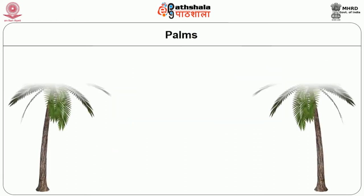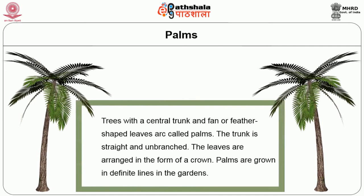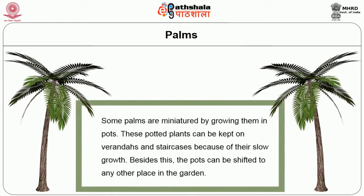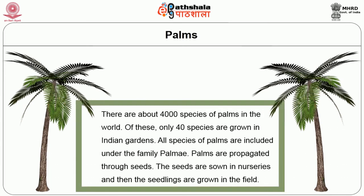Trees with a central trunk and fan- or feather-shaped leaves are called palms. The trunk is straight and unbranched, and the leaves are arranged in the form of a crown. Palms are grown in definite lines in gardens. Some palms are miniaturised by growing them in pots, which can be kept on verandas and staircases due to their slow growth, and the pot can be shifted to any place in the garden. There are about 4,000 species of palms in the world, of which only 40 species are grown in Indian gardens. All species of palms are propagated through seeds sown in nurseries.